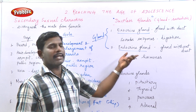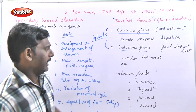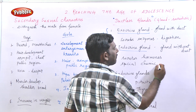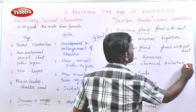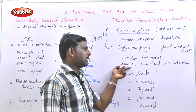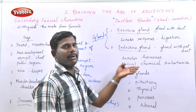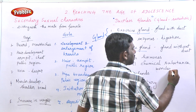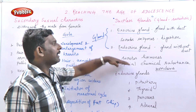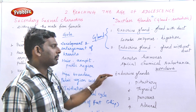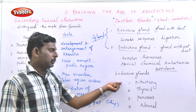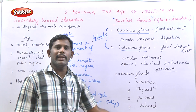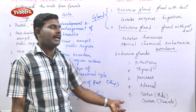What is the importance of the ductless gland? Hormones are special chemical substances present in our body that produce most of the changes during the adolescence period — that is why they are called the 'wonders of our body.' There are 5 important endocrine glands: the pituitary gland, the thyroid gland, the pancreas, the adrenal gland, and the testes and ovaries.